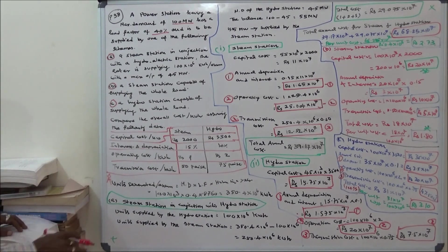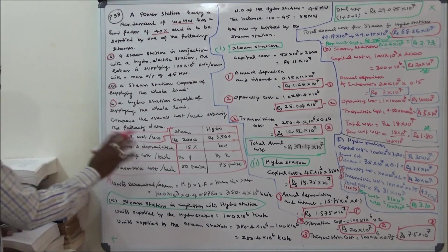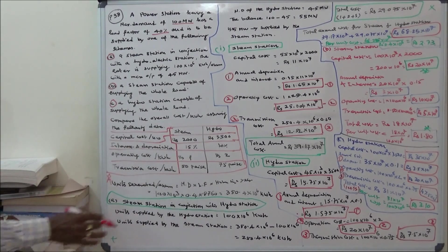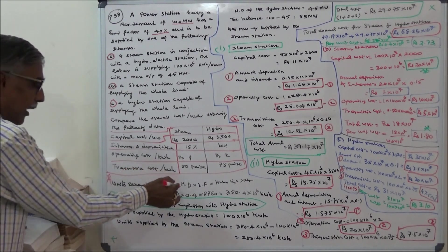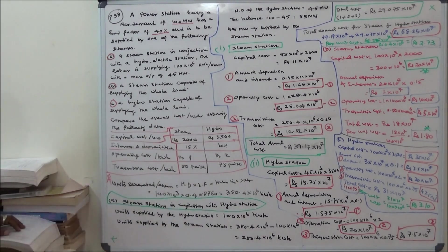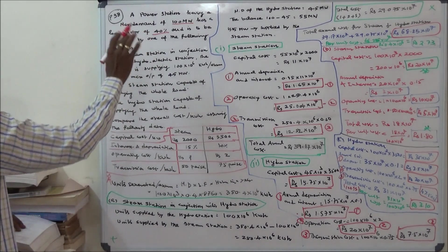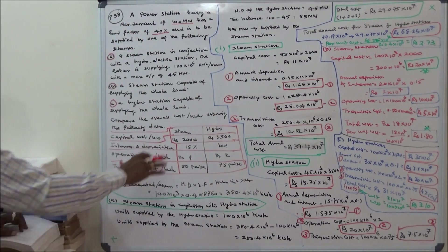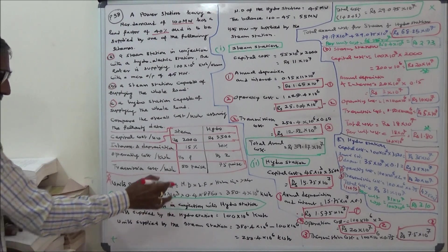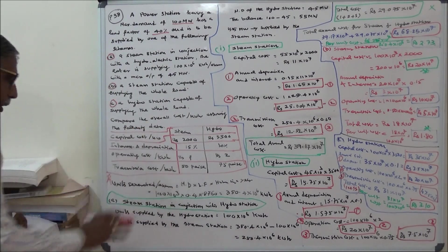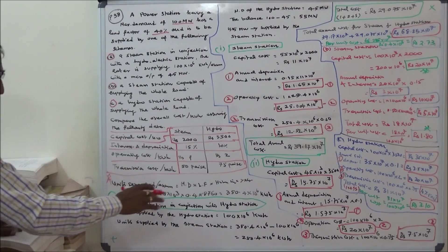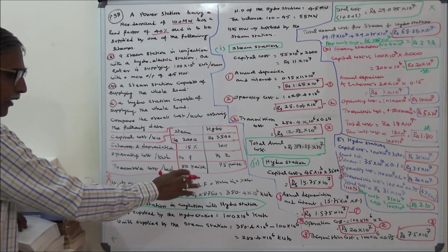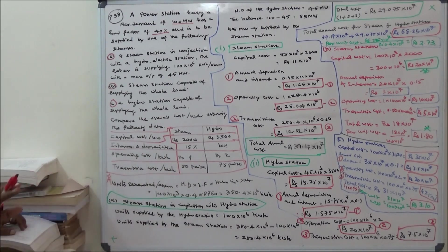First we have to calculate the units generated per annum. Using the formula: maximum demand is 100 into 10 power 3 kilowatt, load factor is 0.4, hours in a year is 8760. Units generated per annum is 350.4 into 10 power 6 kilowatt hours per annum.